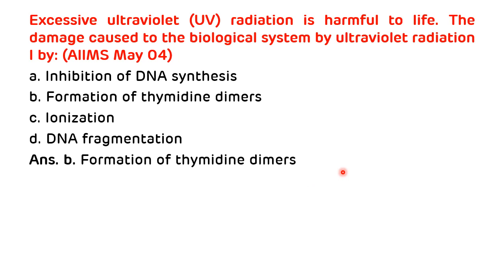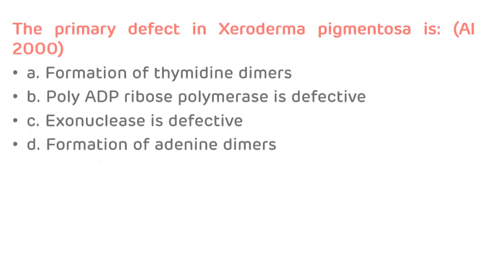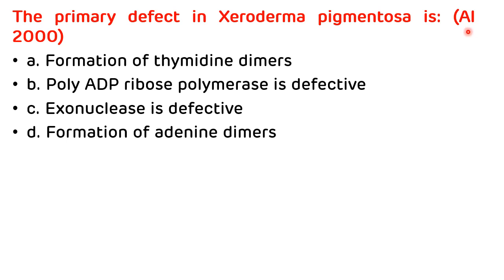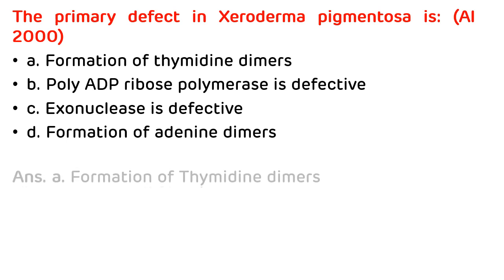These thymidine dimers or pyrimidine dimers are corrected by nucleotide excision repair. If there is any defect in nucleotide excision repair, it leads to xeroderma pigmentosum. A question from All India 2000: The primary defect in xeroderma pigmentosum is — formation of thymidine dimers, poly-ADP ribose polymerase is defective, exonucleases defective, or formation of adenine dimers? The correct answer is formation of thymidine dimers.